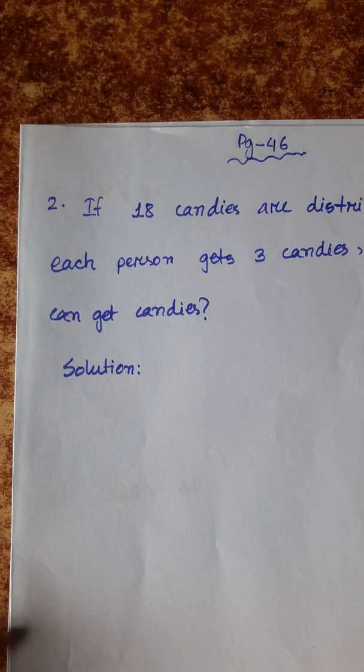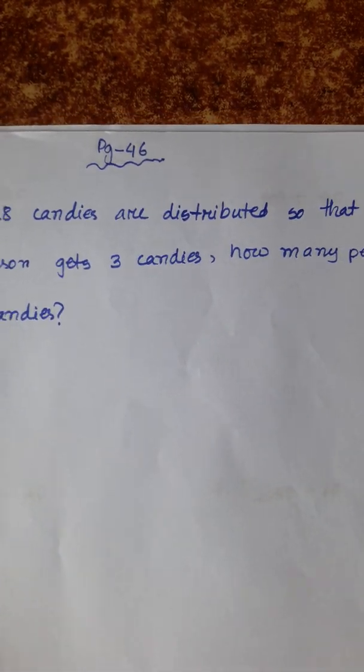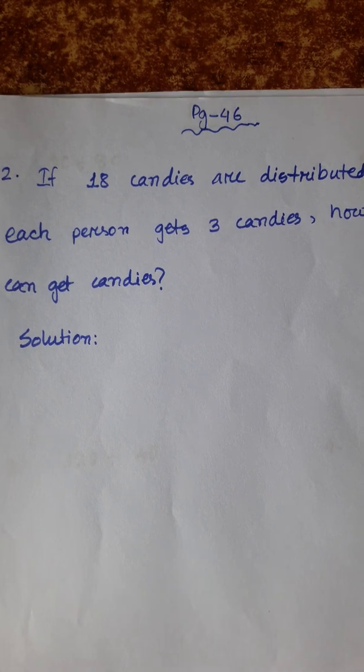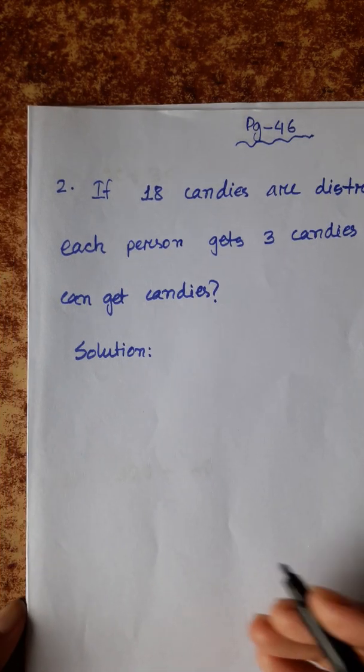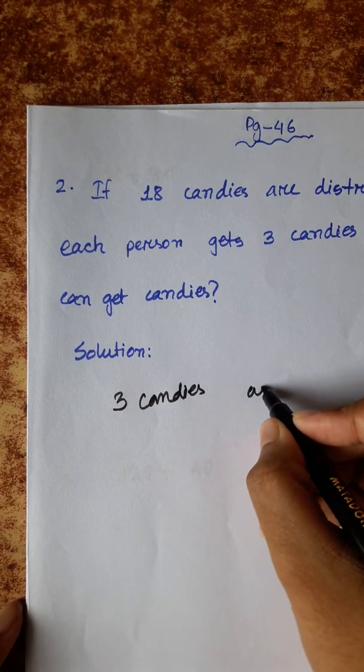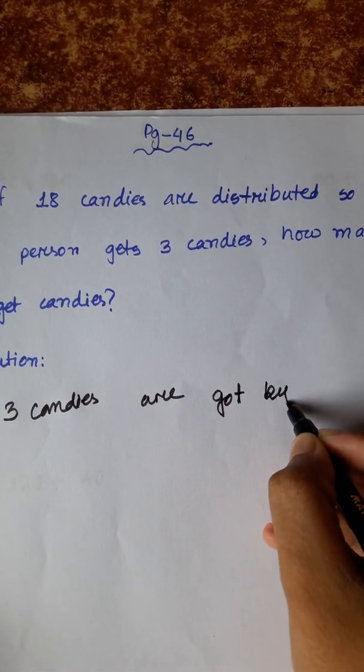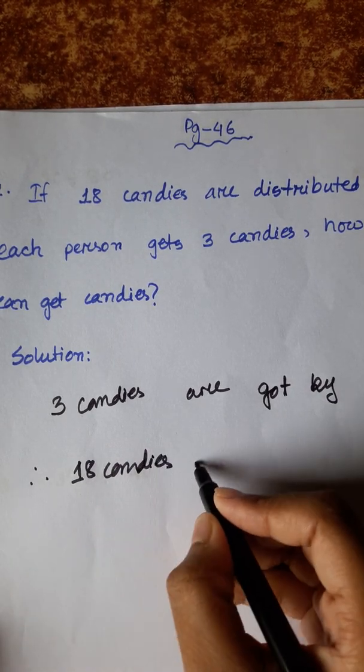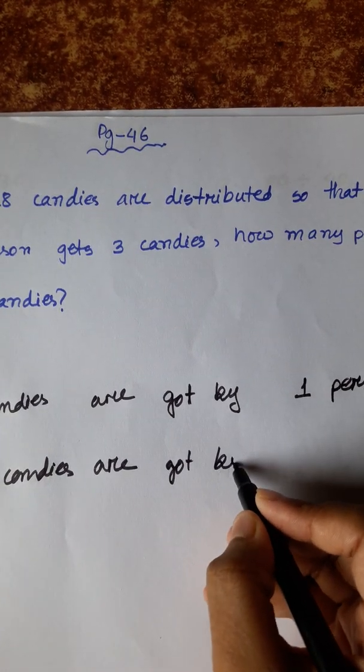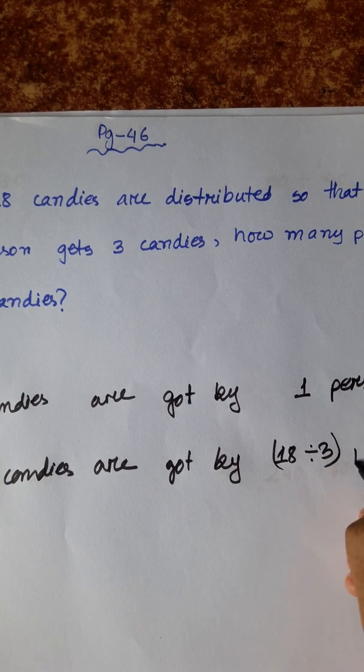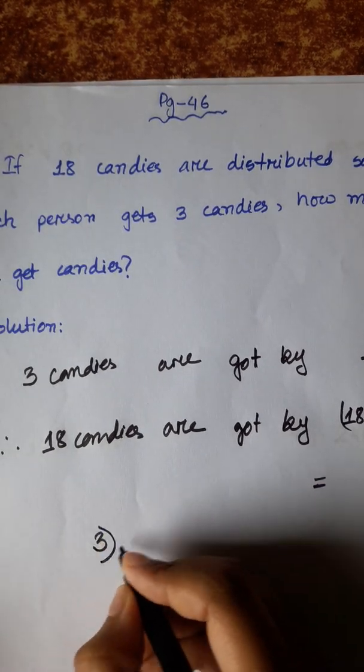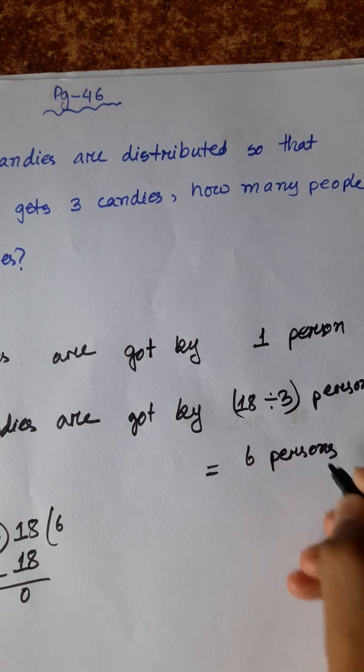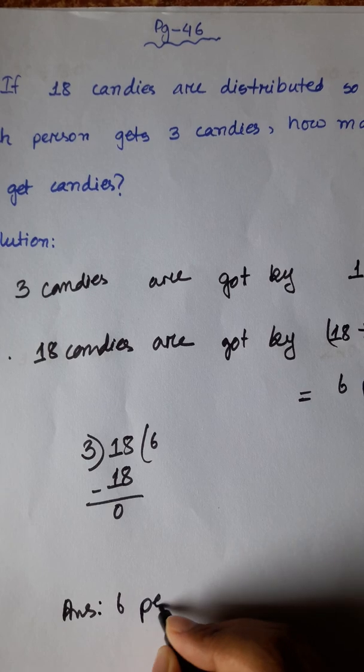Now, if 18 candies are distributed so that each person gets 3 candies, how many people get candies? So we can write: 3 candies are got by 1 person. So therefore, 18 candies are got by 18 divided by 3 persons. We know 6 threes are 18, so 6 persons. Therefore, answer is 6 persons.